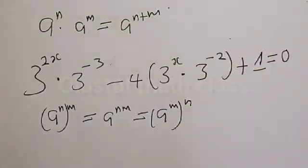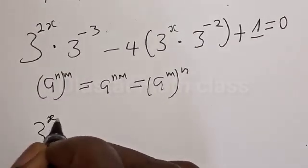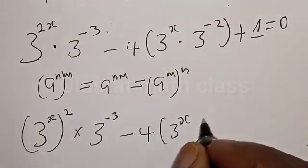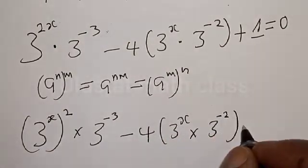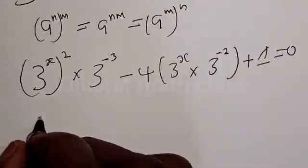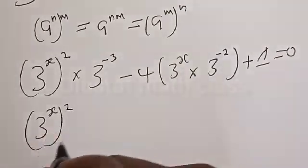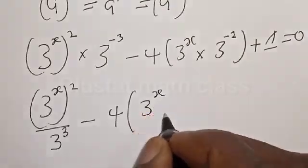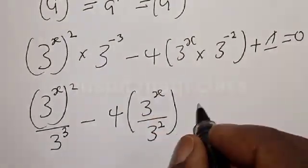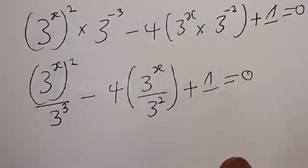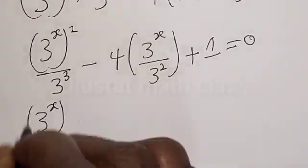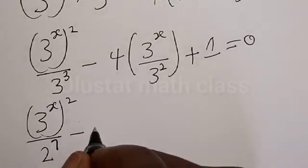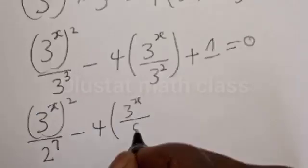Also recall that (a^m)^n equals a raised to power (m times n). So 3 raised to power 2x can be written as (3^x) squared. This gives us (3^x) squared times 3 raised to power minus 3, minus 4 times 3^x times 3 raised to power minus 2, plus 1 equals 0. Rewriting: (3^x) squared over 27 minus 4 times 3^x over 9 plus 1 equals 0, since 3 cubed is 27 and 3 squared is 9.